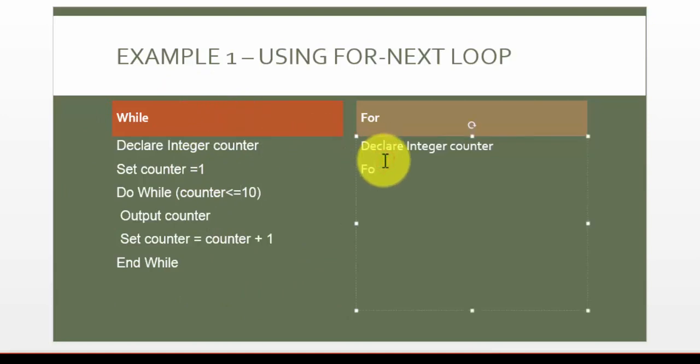So you can pretty much say for counter equals 1 to 10. In the body you can simply display the value of counter and you can say next. And that is basically the for loop equivalent to this while loop.